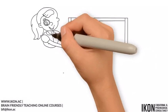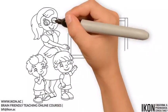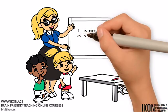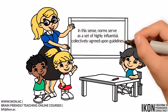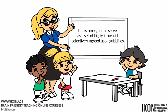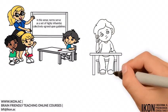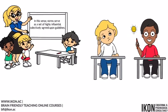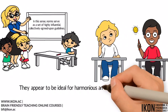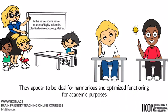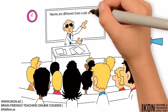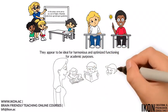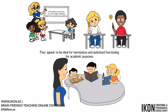On the contrary, when teachers and students collectively establish norms in the classroom, even badly behaved students would eventually respect and adhere to them. In this sense, norms serve as a set of highly influential, collectively agreed upon guidelines. The experience of establishing norms provides students with a chance to think hard and long about what's acceptable and what's unacceptable in the classroom. The norms agreed upon by students make sense to them. They appear to be ideal for harmonious and optimized functioning for academic purposes. Clearly, norms are different from a set of rules that an authority figure imposes on students. Norms motivate students to honor communally endorsed classroom behaviors and attitudes as a sign of loyalty to their friends and teacher.